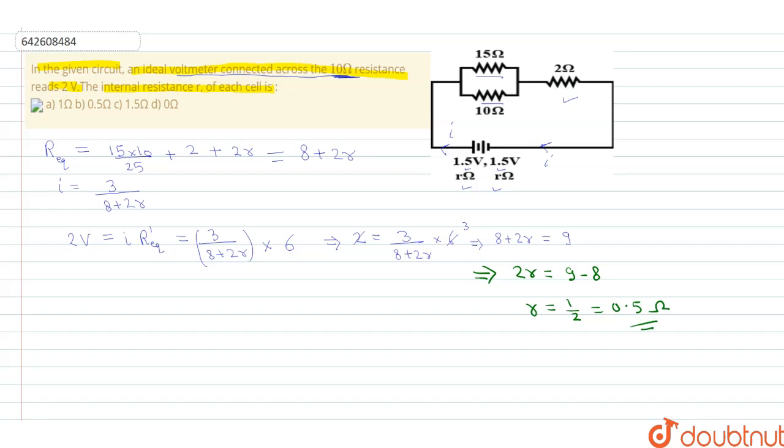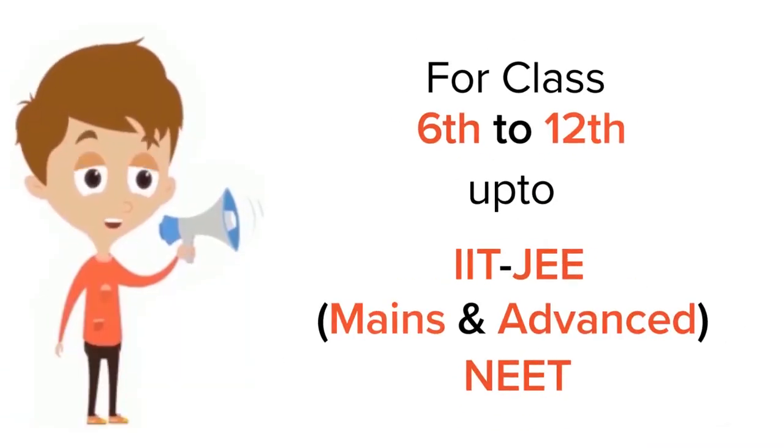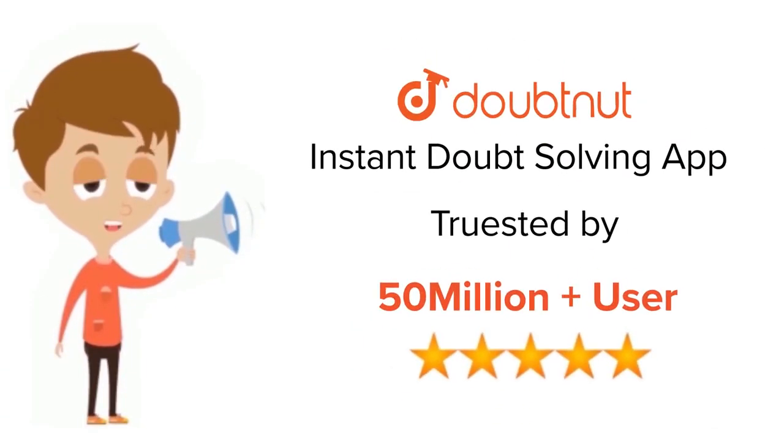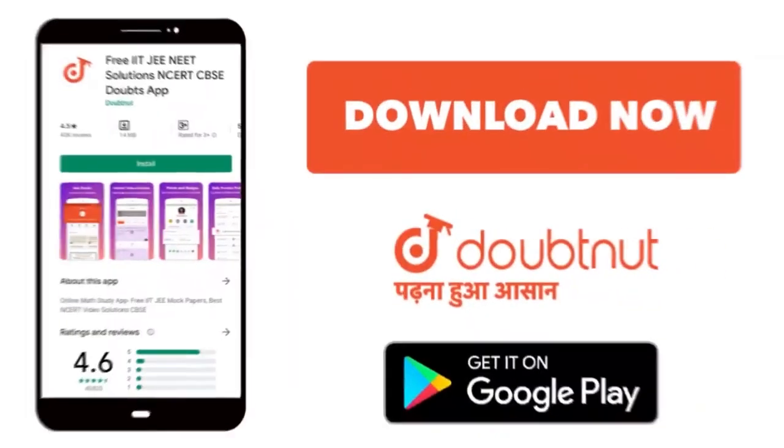So the correct option is option B as the result of this answer. Thank you. For class 6 to 12, IIT-JEE and NEET level, trusted by more than 5 crore students, download Doubtnet app today.